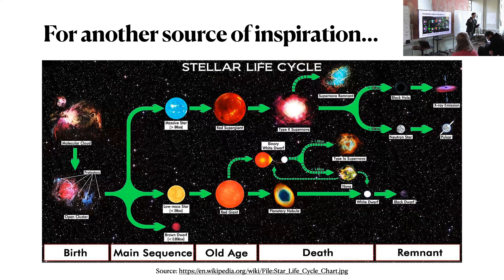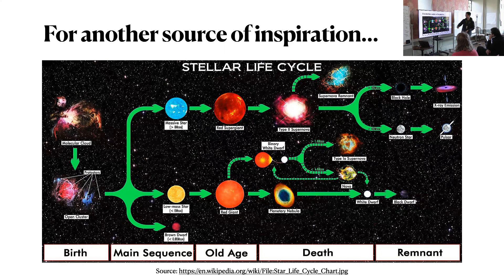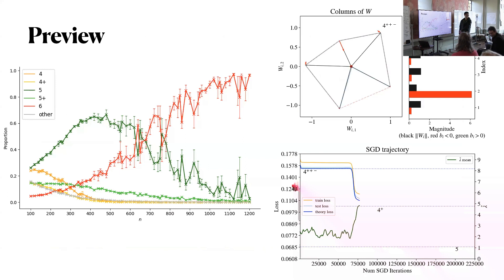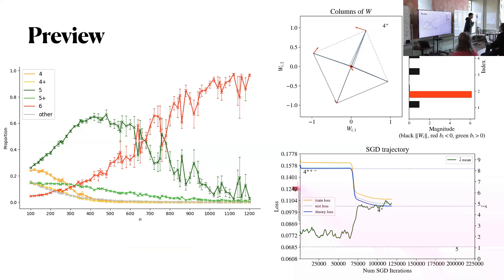For another source of inspiration — just to vary your sources of analogy — this is the stellar life cycle. Gas clouds develop into stars and go through different stages of life. We actually call them life cycles, and then they develop into different things. There are different paths depending on the conditions. Different stars have different fates.